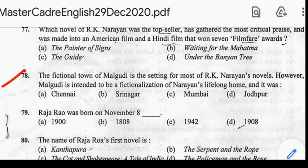Number 78: the fictional town of Malgudi is the setting for most of R.K. Narayan's novels. Malgudi is intended as a fictionalization of Narayan's lifelong home, which was in Chennai. Number 79: Raja Rao was born on November 8, 1908.